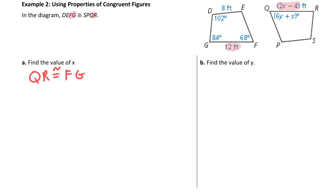So my equation, QR, the expression is 2x minus 4. FG is 12. So I just set them equal to each other. They are equal measures because they are congruent. So this is the equation. And then I just have to solve. 2x equals 16. X is 8.